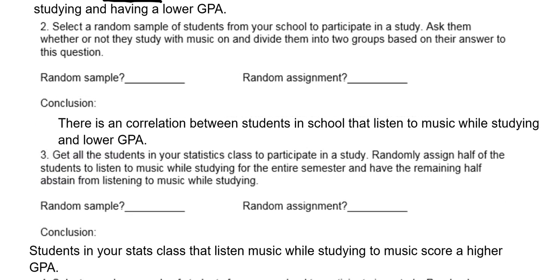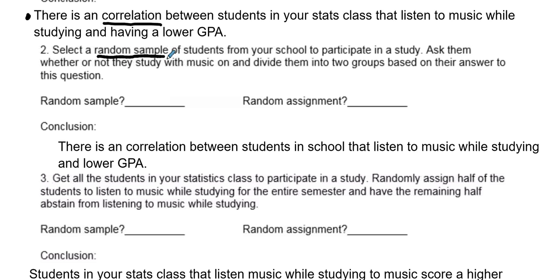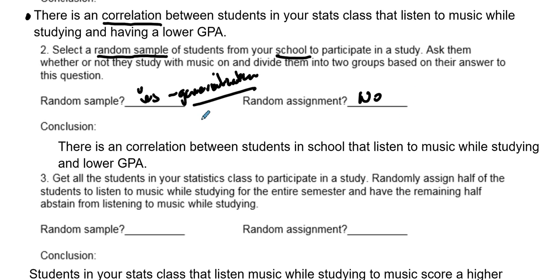Study 2: Select a random sample of students from your school, ask them whether or not they study with music on, and divide them into two groups based on their answers. Was there a random sample? Yes — so we can generalize. Was there random assignment? No — so there is no cause and effect. This is observational. There is a generalization to the population of this school, and there's a correlation between students in the school who listen to music while studying and lower GPA.